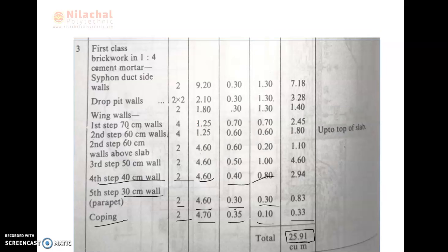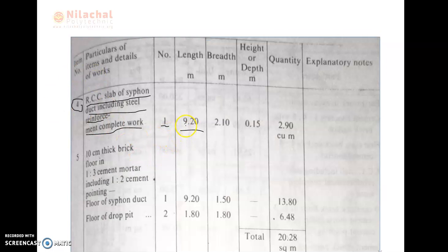So we write here: the length is 5.20, the breadth is equal to 6.10, and the height is equal to 0.15 m, because the access slab thickness is 0.15 as clearly indicated in the question. The total quantity of the access slab is equal to 2.90 m³. Then we move to item number 5. Thank you.